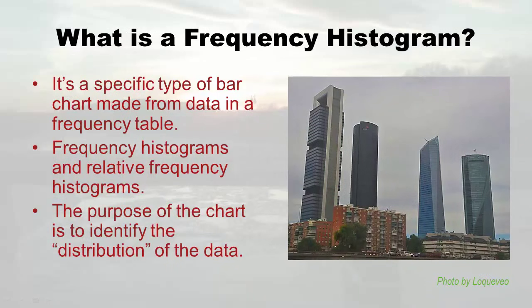A frequency histogram is actually a specific type of bar chart, and it's made from data in a frequency table. You might look at it and think it's just a boring old bar graph, but it's got specific properties. Both frequency histograms and relative frequency histograms are special bar charts that have to be done a certain way, because if done correctly, they will reveal the distribution of the data.